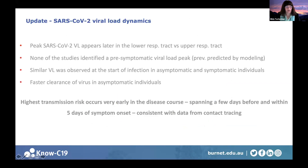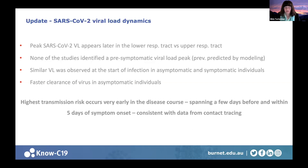Peak SARS-CoV-2 viral load appears later in the lower respiratory tract versus the upper respiratory tract. None of the studies identified a pre-symptomatic viral load peak, which had been predicted by modeling studies. Similar viral loads were observed at the start of infection in both asymptomatic and symptomatic individuals, but faster viral clearance was seen in asymptomatic individuals. The main conclusion is that highest transmission risk occurs very early in the disease course — spanning a few days before and within five days of symptom onset — consistent with contact tracing data.